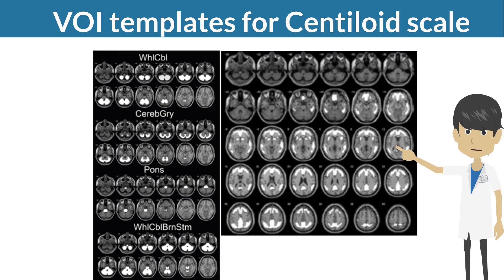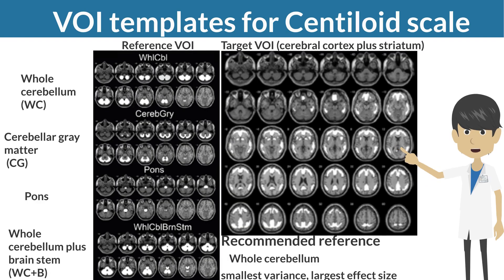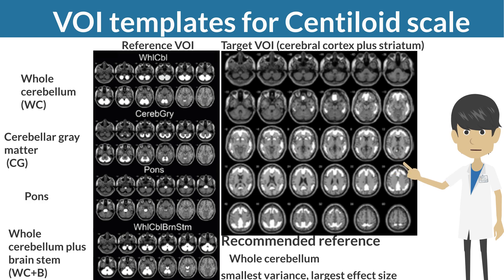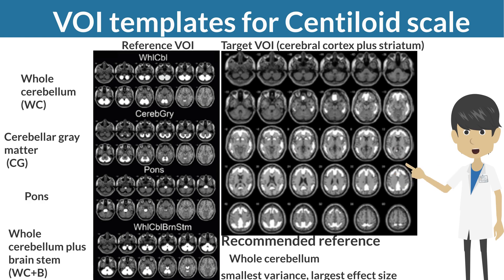Four reference regions — whole cerebellum, cerebellar gray matter, pons, and whole cerebellum plus brain stem — and a target region in cerebral cortex and striatum are used for estimation of centiloid scale as volumes of interest. Of these four reference regions, whole cerebellum is recommended due to the smallest variance and the largest effect size.